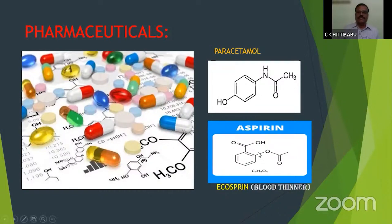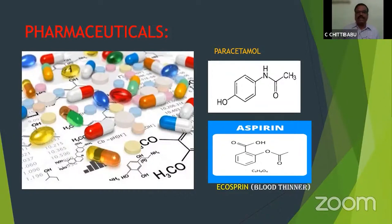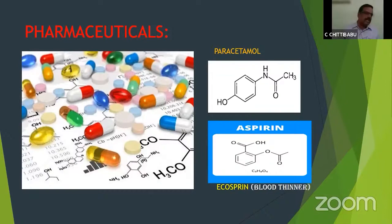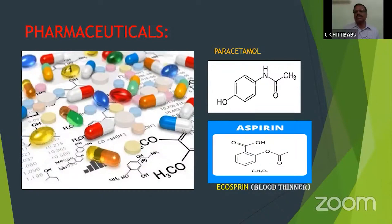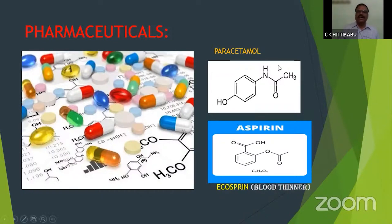Another example is aspirin, used as a blood thinner. Any person with a heart complaint will certainly have it in the form of Ecosprin. The chief ingredient in Ecosprin is aspirin. We study its preparation in chemistry in everyday life, and in internal examinations students may have come across the IUPAC name or preparation of aspirin.